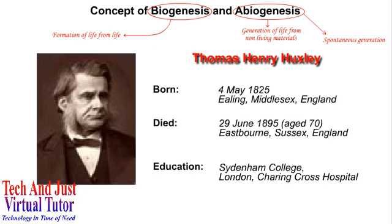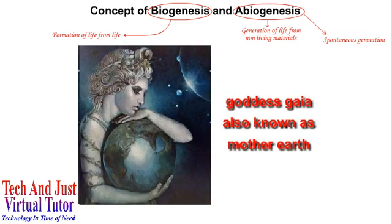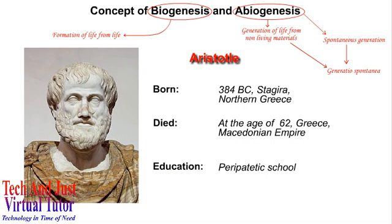Looking into history, it was the belief of ancient Greeks that the goddess Gaia, also known as Mother Earth, could make life arise spontaneously from stones — a process known as generatio spontanea. Aristotle, who was also a Greek philosopher, disagreed with this process and instead stated his belief that generatio spontanea could mean that creatures arise either from similar organisms or from soil.